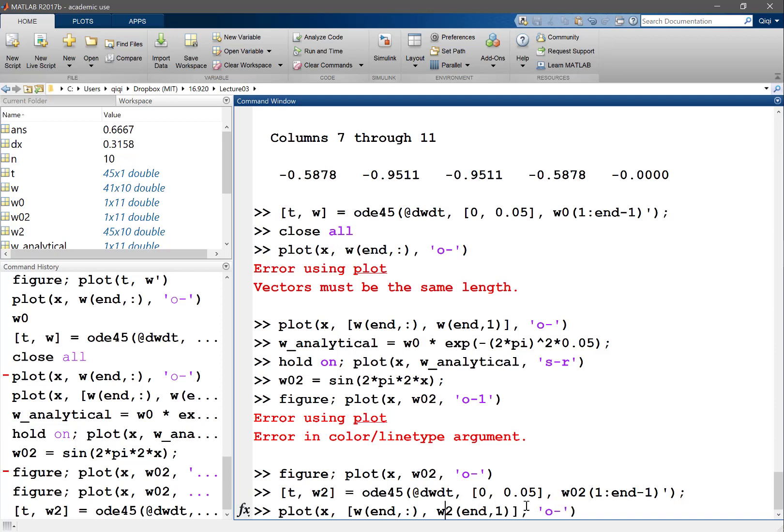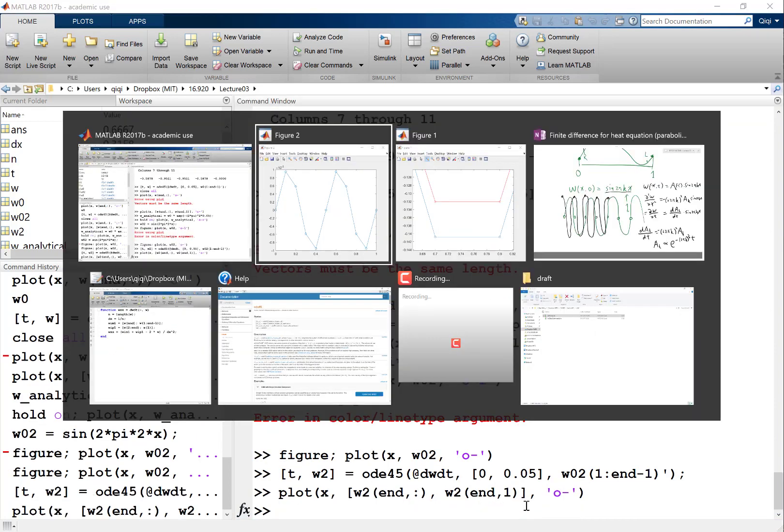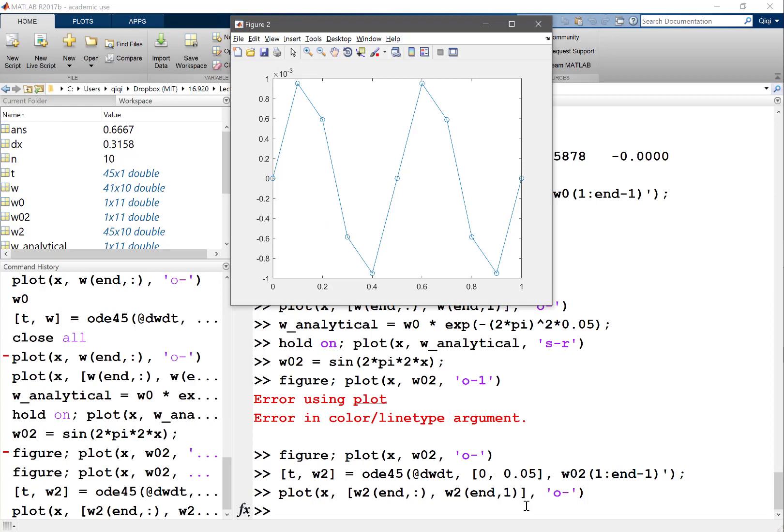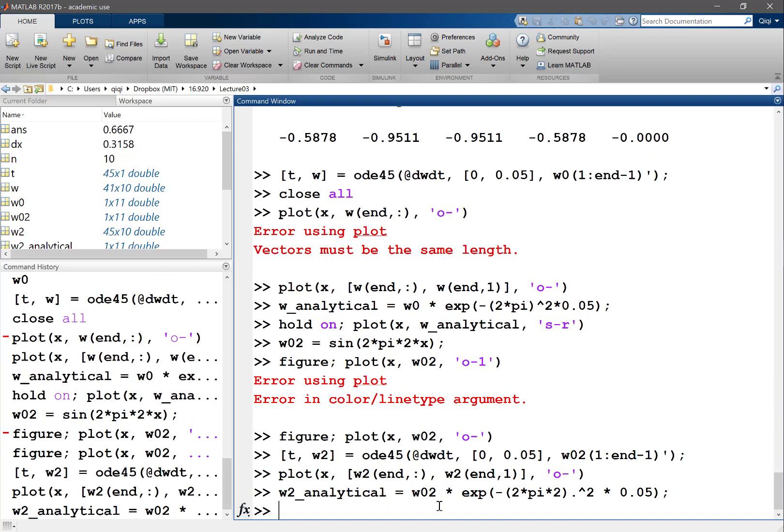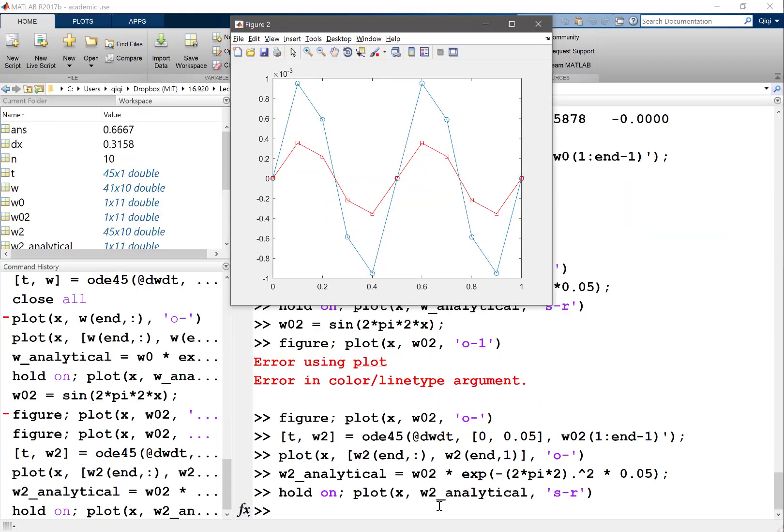I'll put a 2 everywhere. I'm going to use the same thing. So now on my new figure I'm going to plot my W2. And then my analytical solution, W2 analytical, is going to be W02 times exponential of minus 2π times 2 squared times 0.05, which is the time. I'm going to hold on and plot x and W2 analytical over here. So that's what I got.